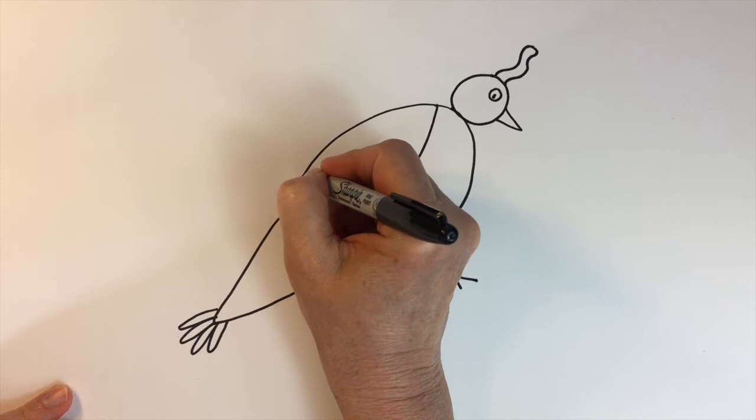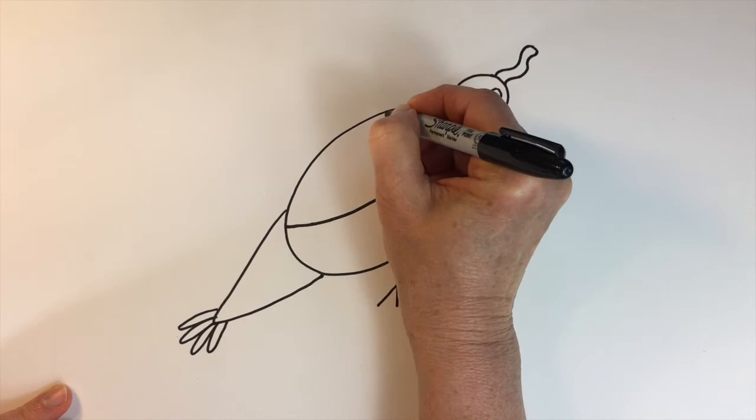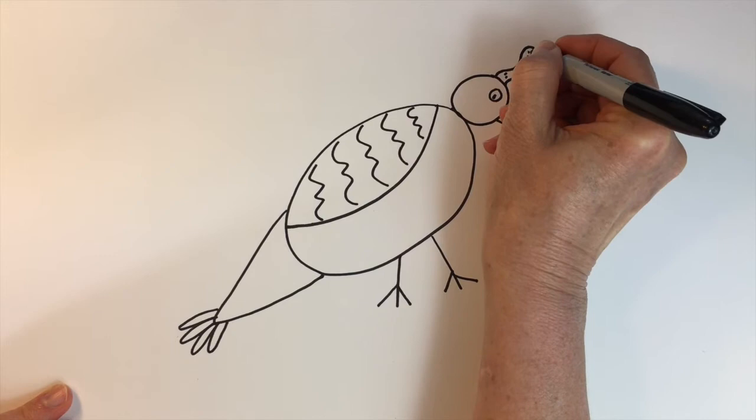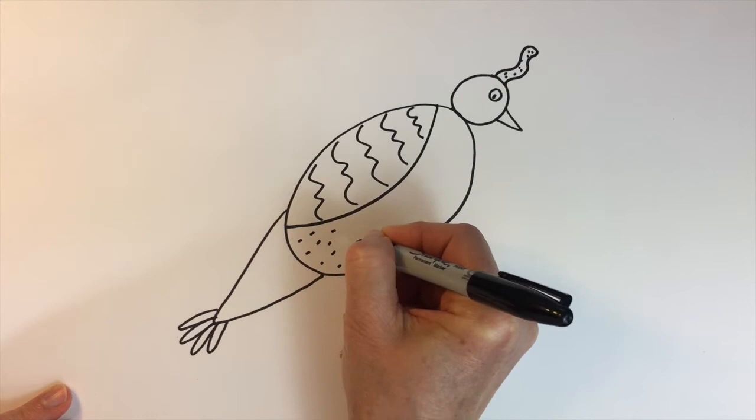I'm going to add some curves for his wings for his feathers and then just a little texture up here and then markings on his body to indicate more feathers.